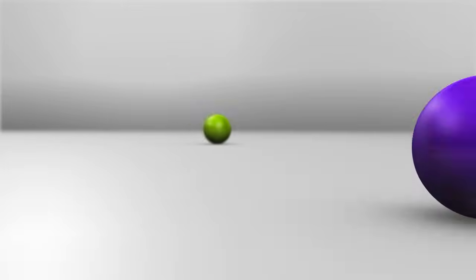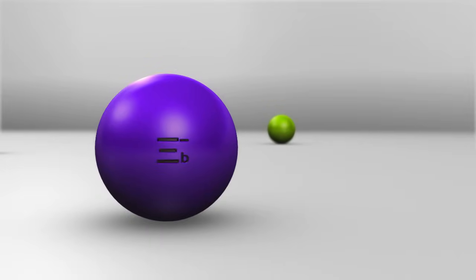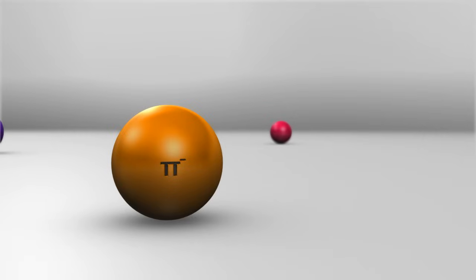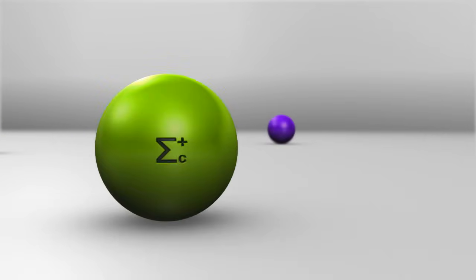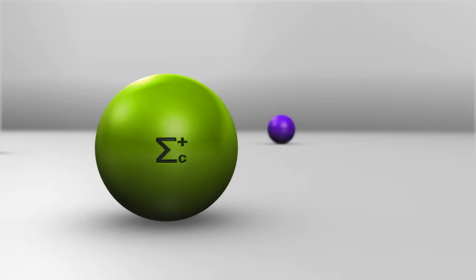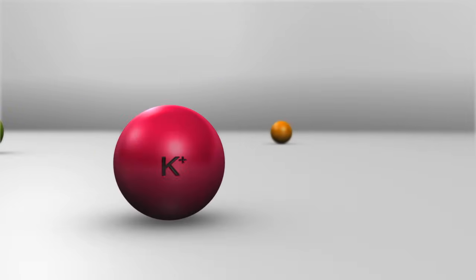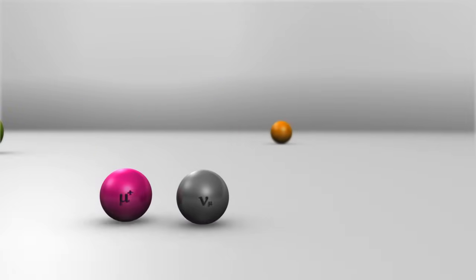So we started organizing these particles according to the properties they have. And the properties are things like spin, electrical charge, so if they're positively charged, negatively charged or neutral, mass of the particles and the lifetime of the particles, which is how long it takes before they decay into lighter particles.